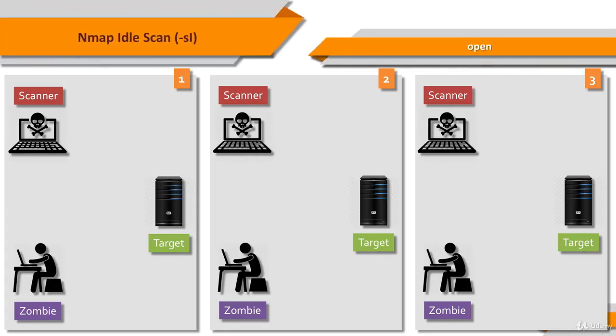Let's see what happens in an IdleScan if the target port is open. The first step is to probe the IPID of the zombie system. The attacker sends a SYN/ACK to the zombie. Since the zombie does not expect the packet, it sends back a RST with an IPID.